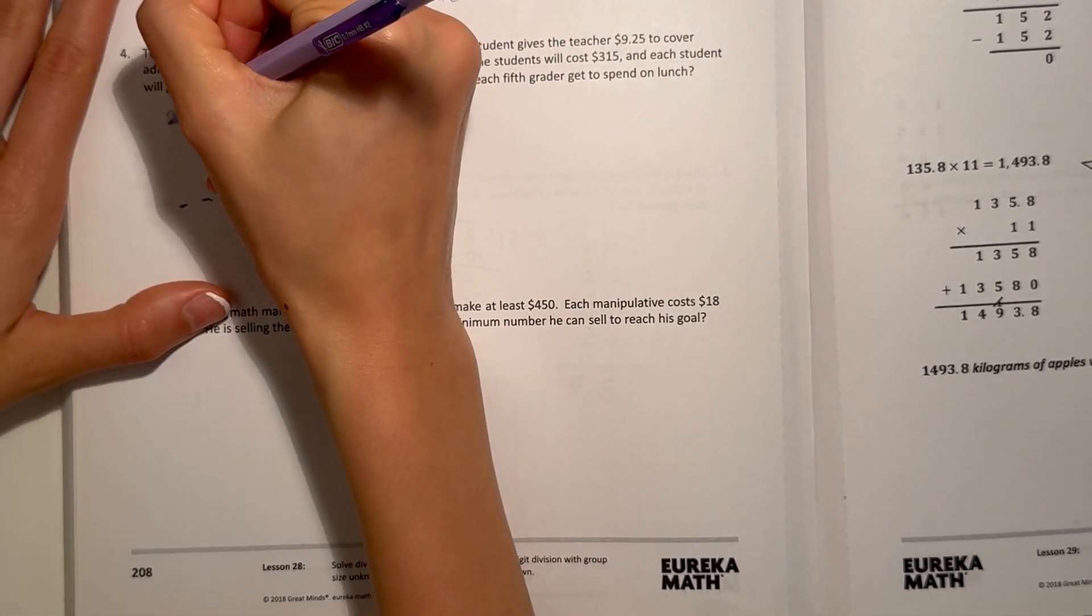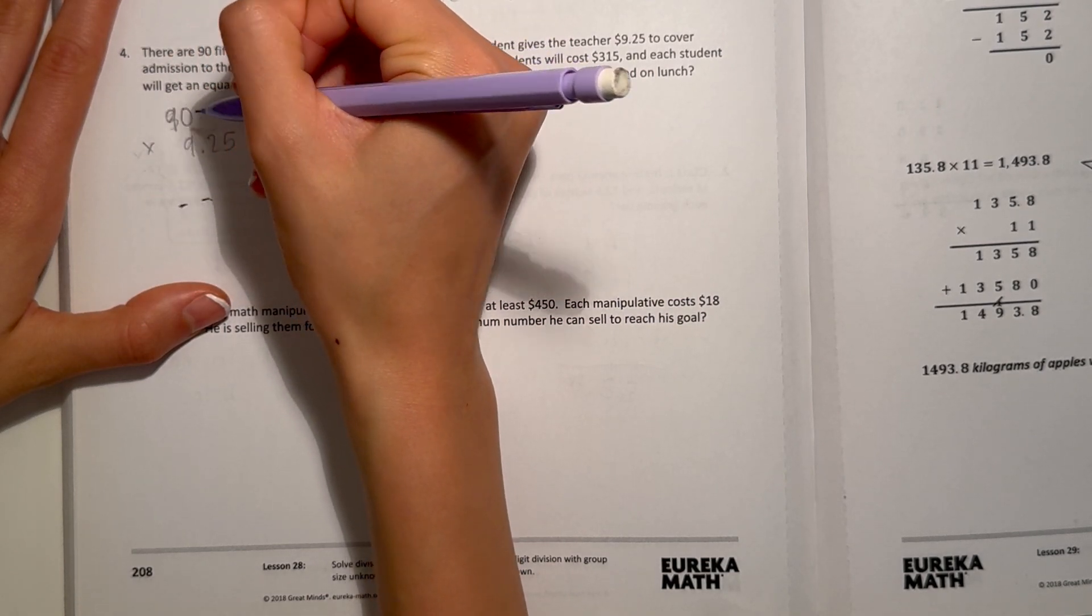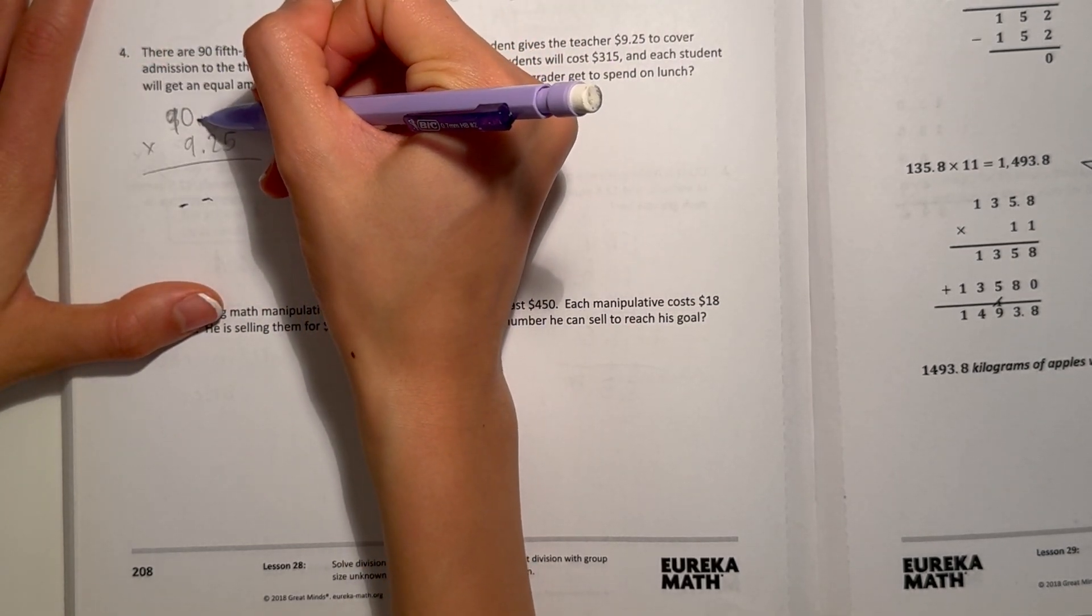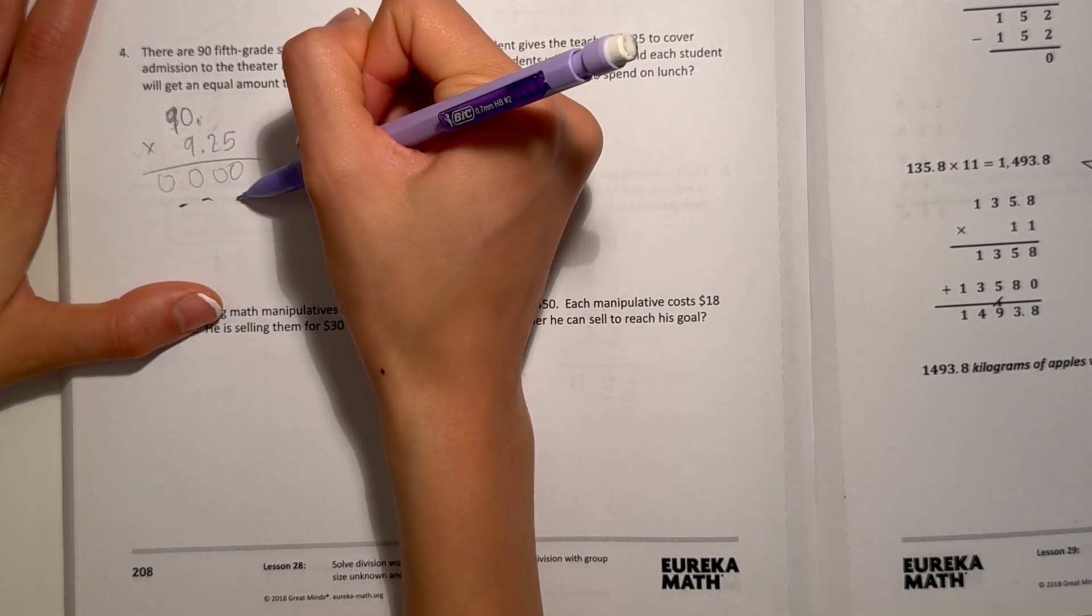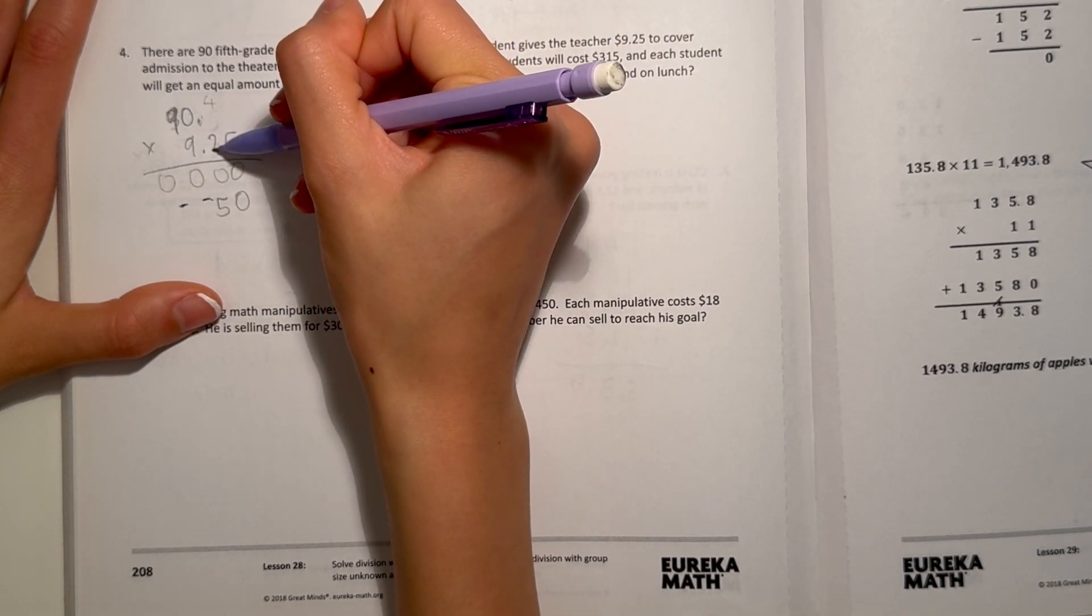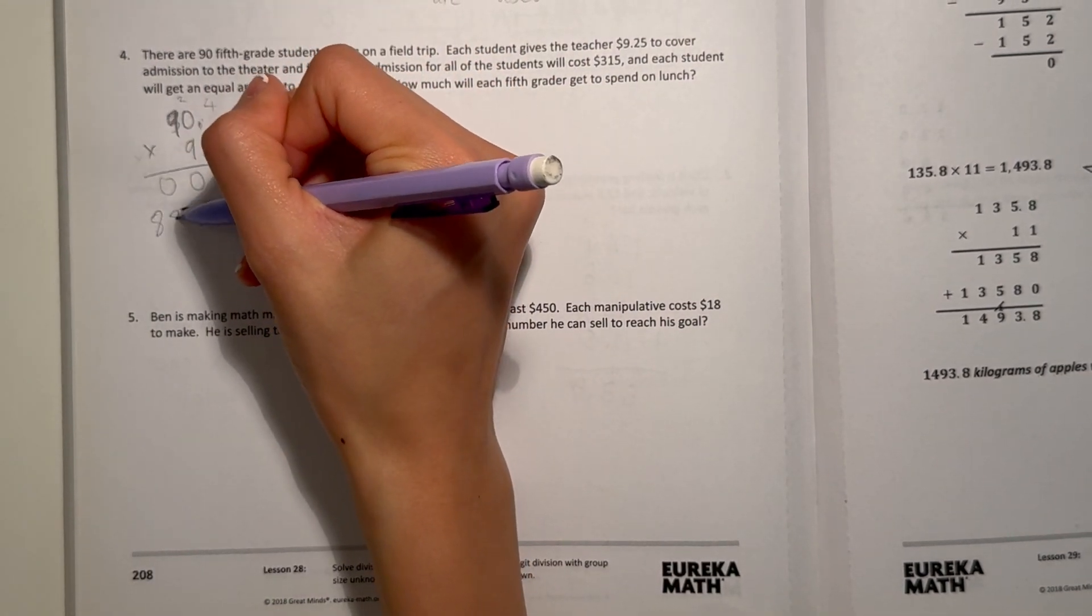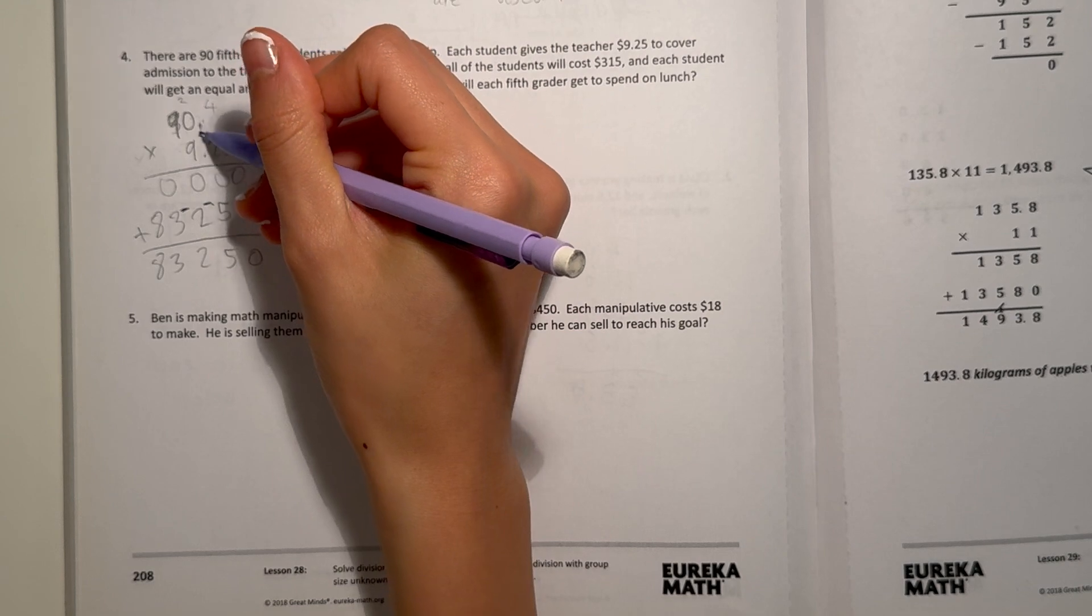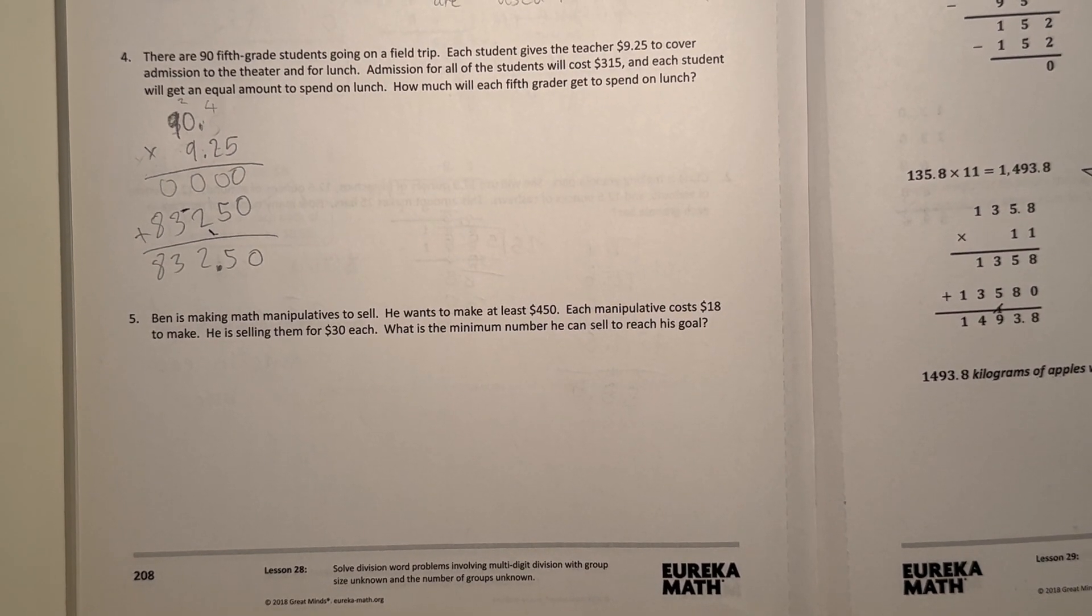90 students times $9.25. Zero times everything is zero. Then 9 times 5 is 45. 9 times 2 is 18 plus 4 is 22. 9 times 9 is 81 plus 2 is 83. Add that all together. $832.50 is collected in total.